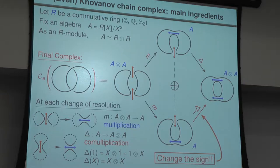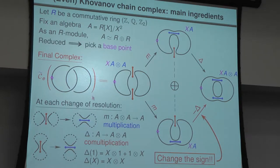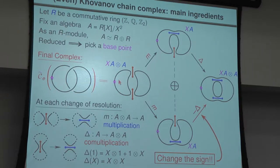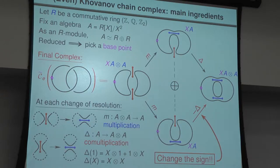Details are swept under the rug, but this gives the rough idea. For the reduced version, not much needs to be done: pick a base point on the diagram, which propagates along all resolutions. To each marked circle we assign only half of A — the submodule R·1 — so the graded dimension becomes just Q instead of Q + Q⁻¹.